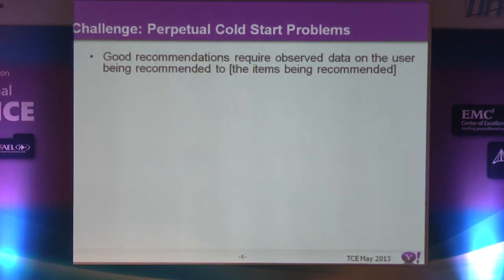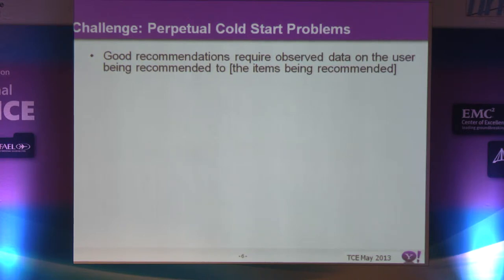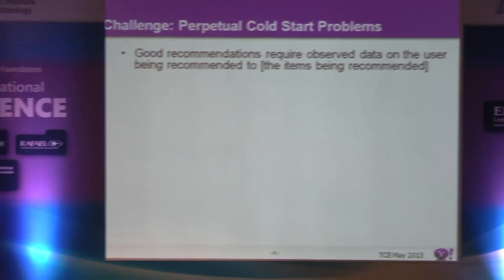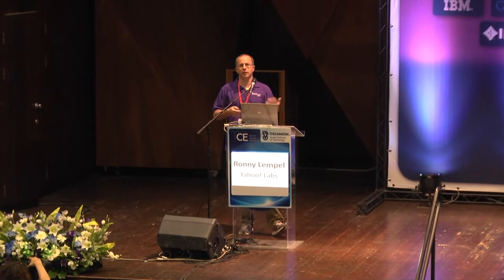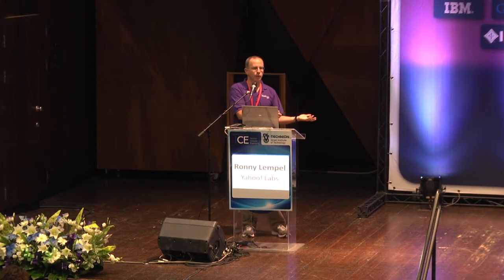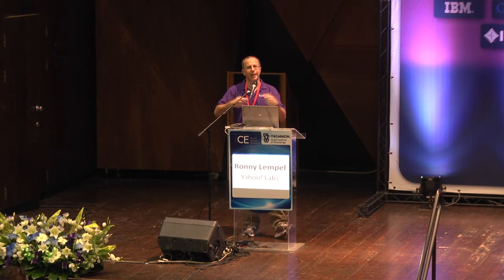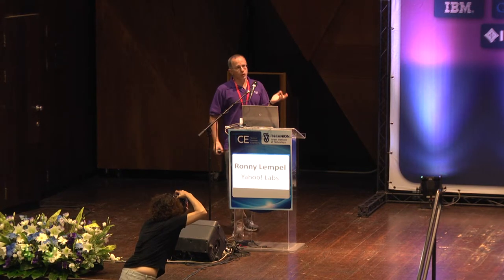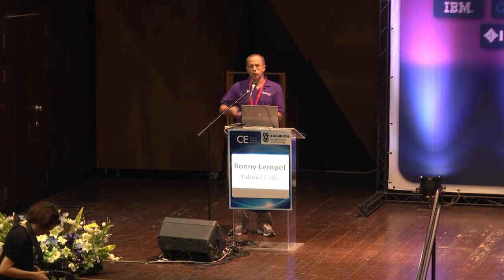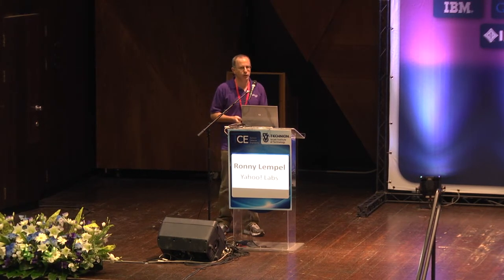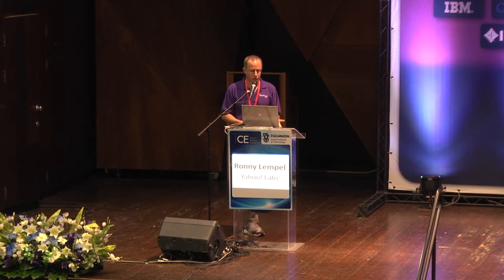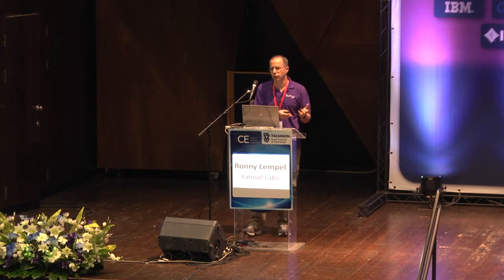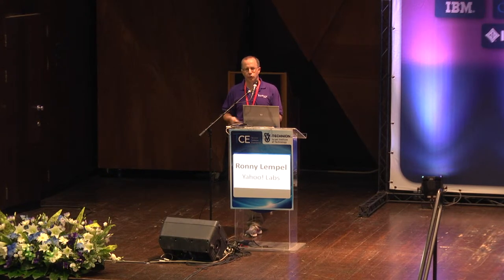The first challenge I want to address is the perpetual cold start problem. To generate good recommendations, recommender systems must observe some data on the user or on the items being recommended — some history of what the user consumed before, or who consumed this item before. The user cold start problem deals with users who are new to a system: the system has no history about that user but still wants to make a good first impression. The flip side for items: we have a new item in our inventory to recommend, but nobody has ever consumed it. How do we route this item to applicable users?